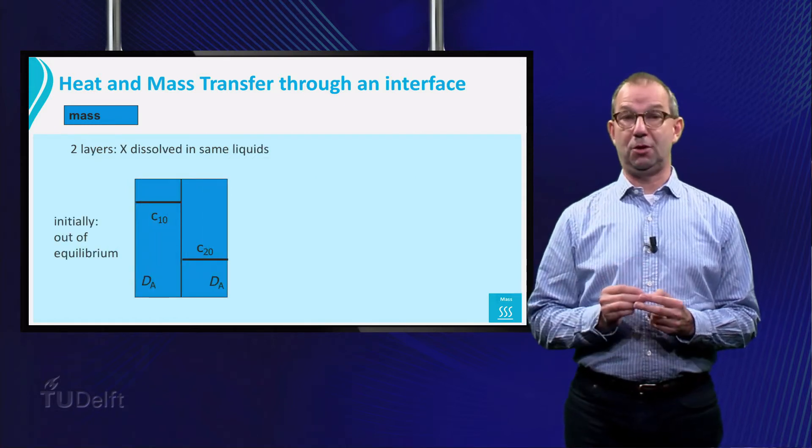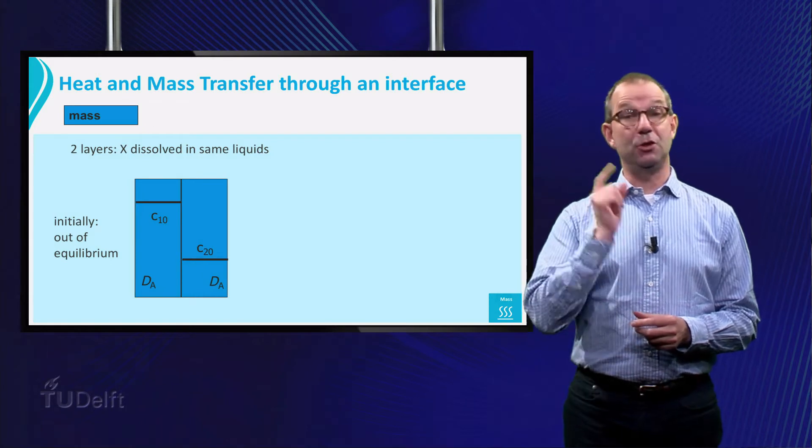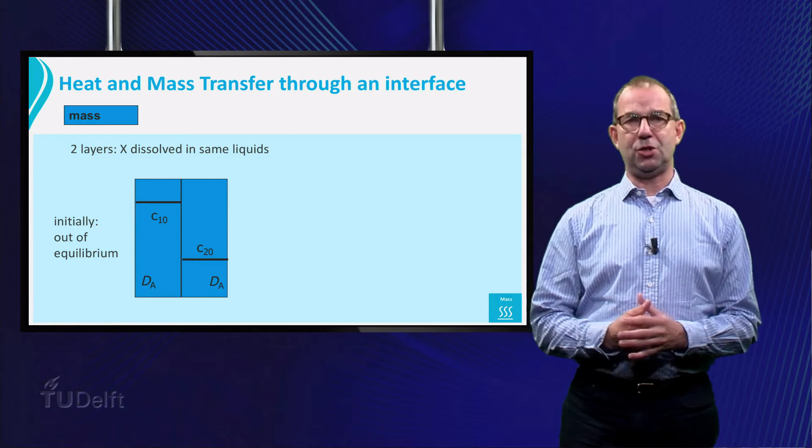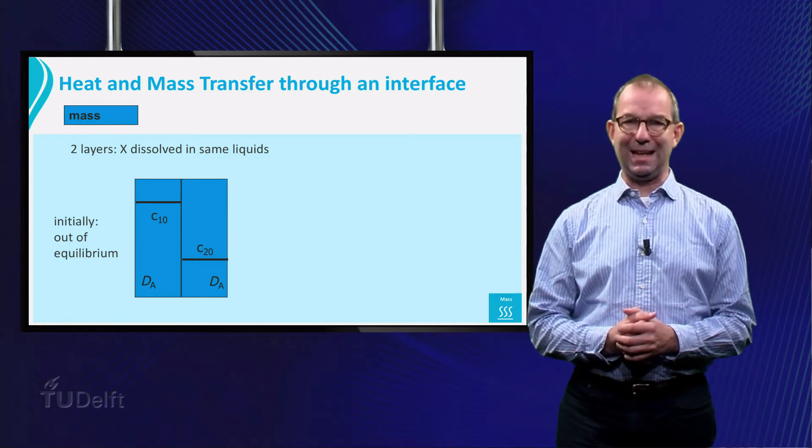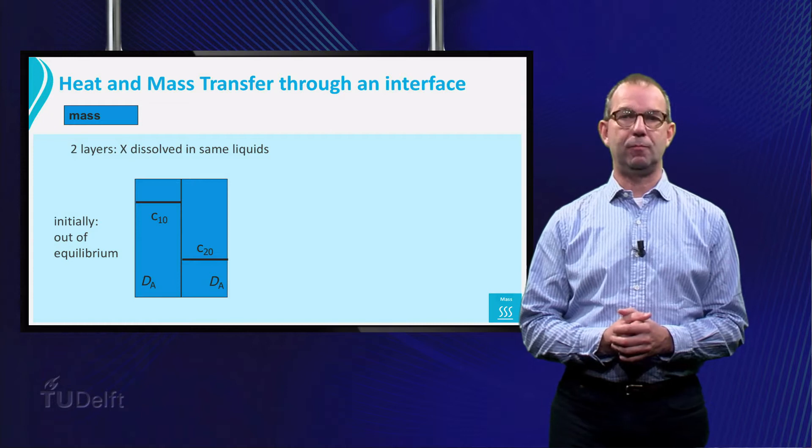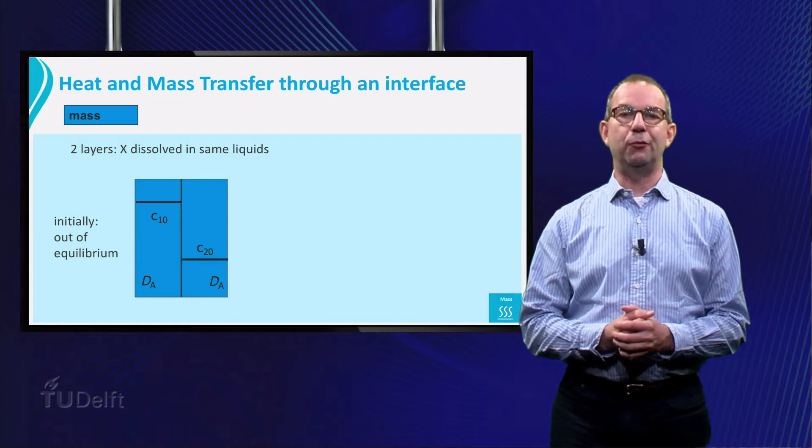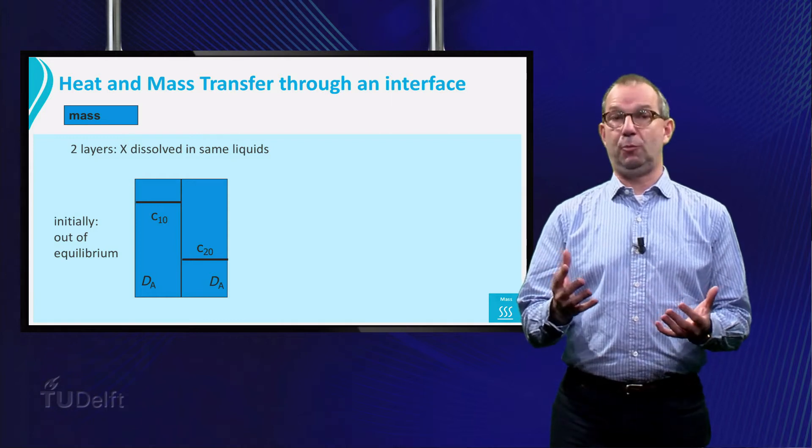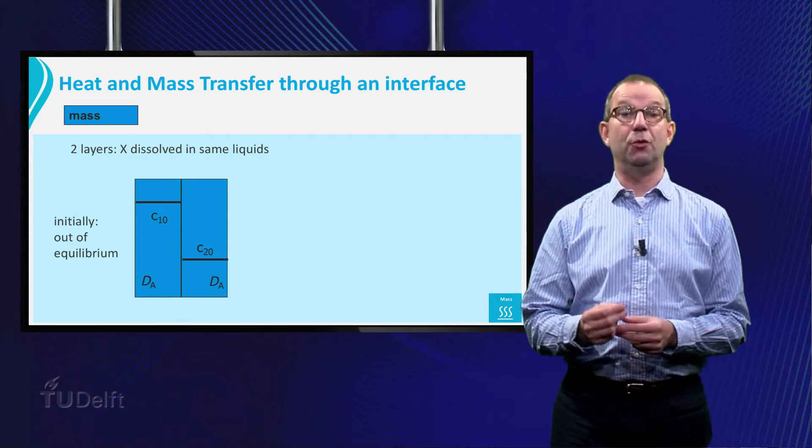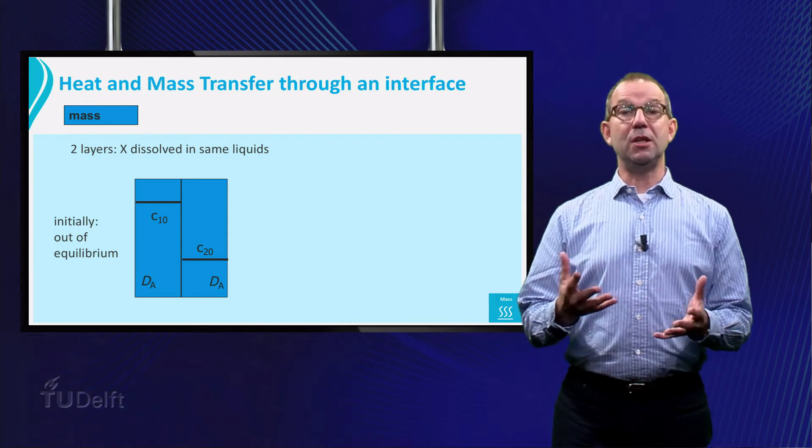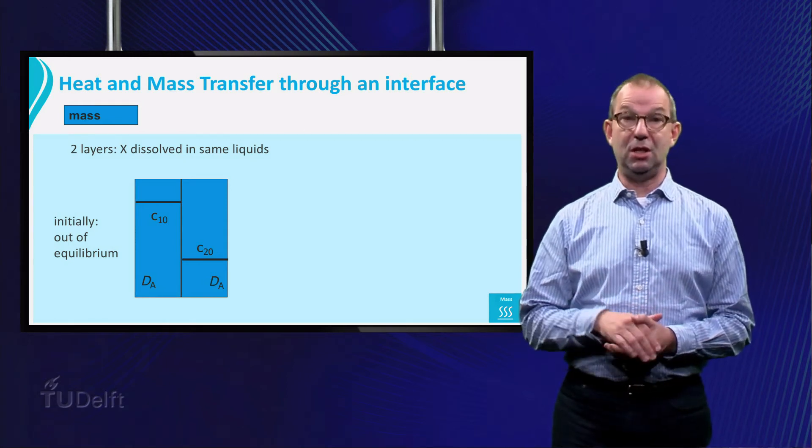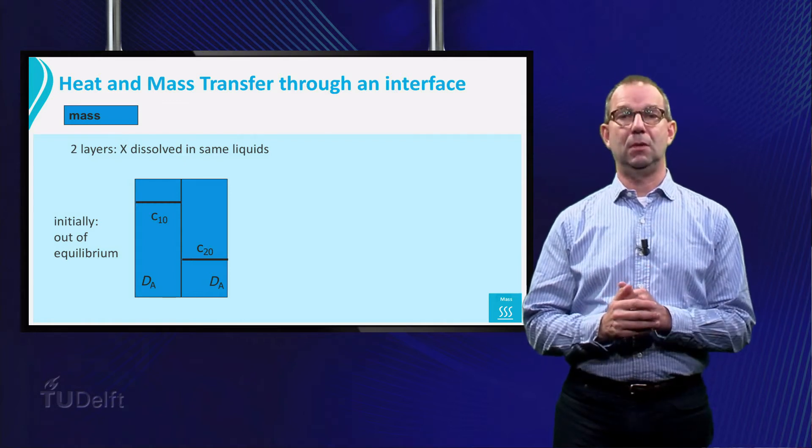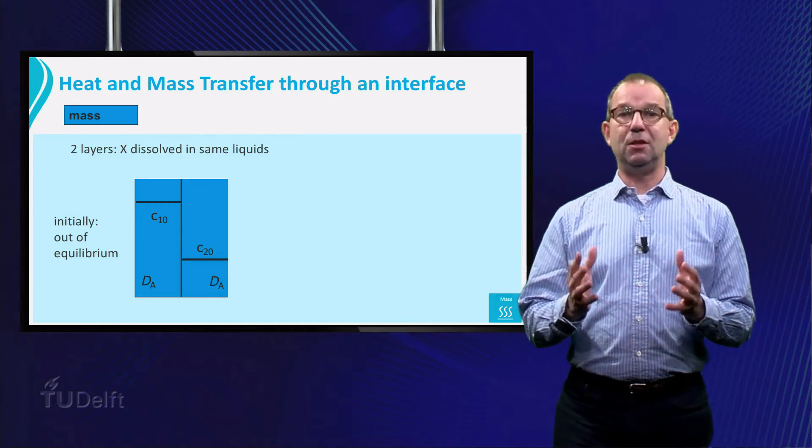But with mass transfer and concentrations, it is a different story. We take now two layers of a liquid, with a component X dissolved in them. These layers are formed of identical liquids, just like we started with heat by looking at two layers of the same material. Initially the concentration of X is higher in one layer than in the other. What do we expect in the final situation?